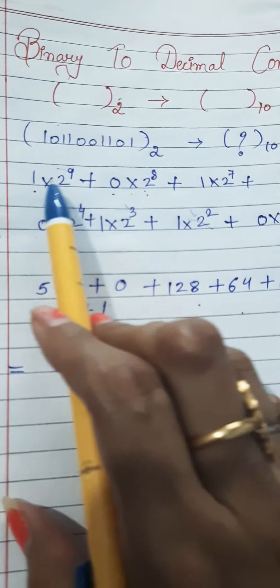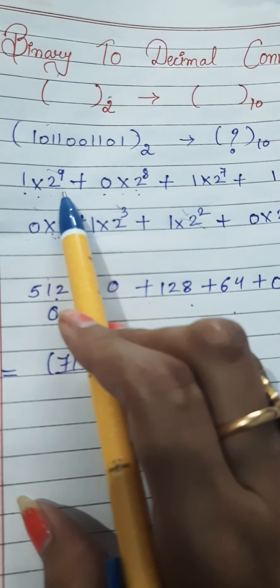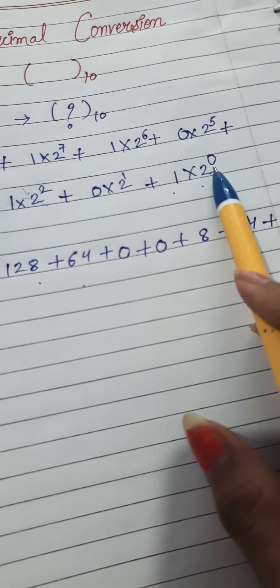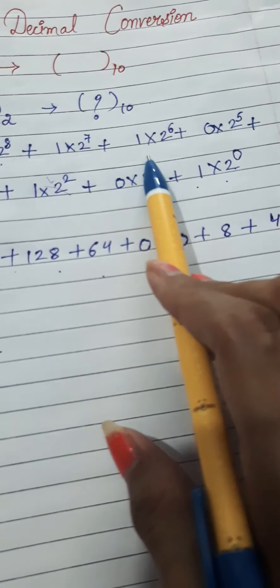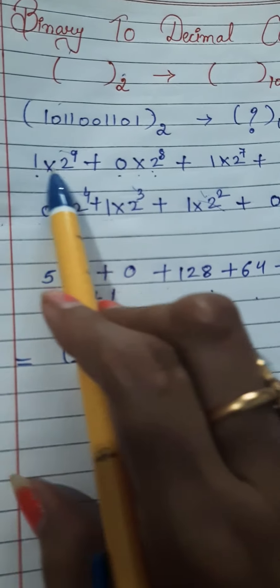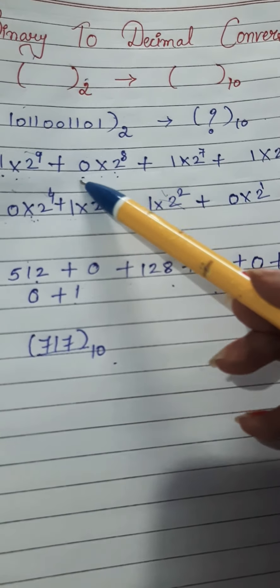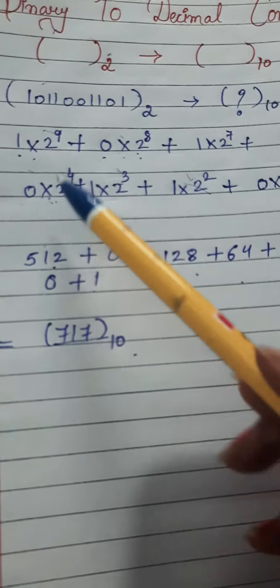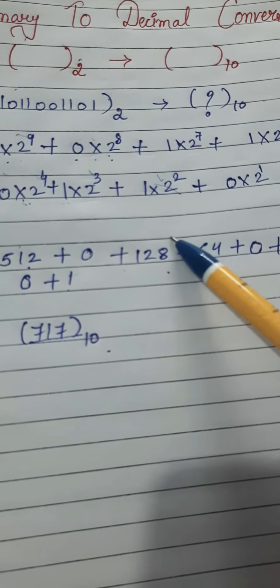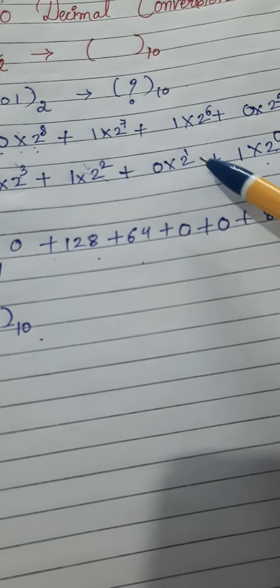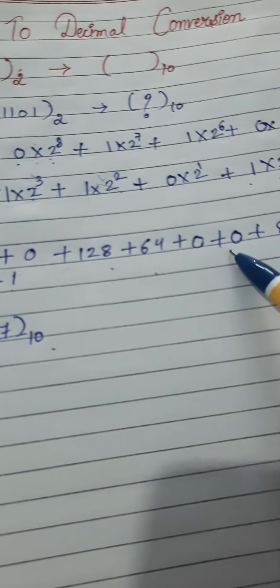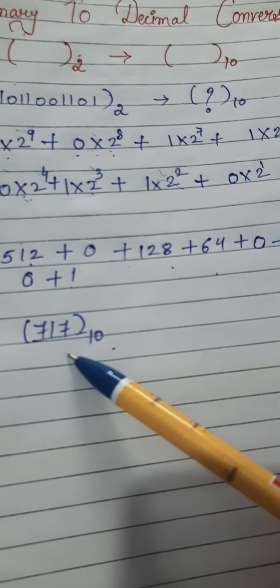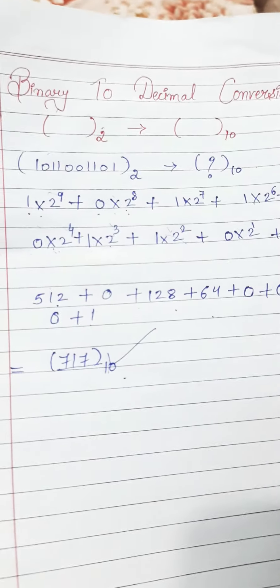Let me repeat the steps. First, write the binary digits spaced out, then multiply by 2 and put a plus sign between all the numbers, then put the powers of 2 starting from 0, 1, 2, 3, 4, 5, 6, 7, 8, 9 and so on. If a digit is 0, the term becomes 0. So 2 to power 9 is 512, 2 to power 7 is 128, 2 to power 6 is 64, 2 to power 3 is 8, 2 to power 2 is 4, and 2 to power 0 is 1. Adding these gives the decimal result. This is the conversion of binary to decimal.